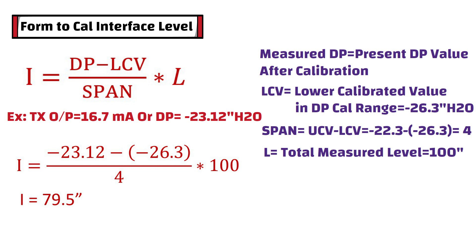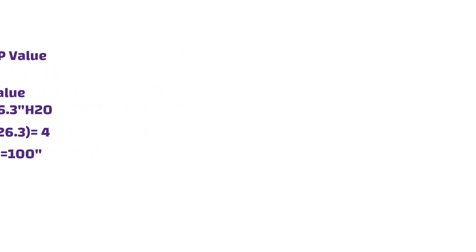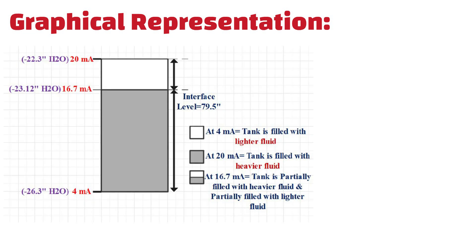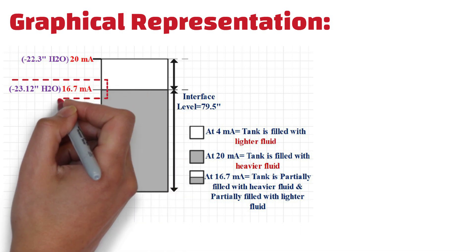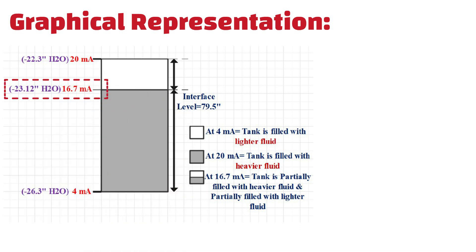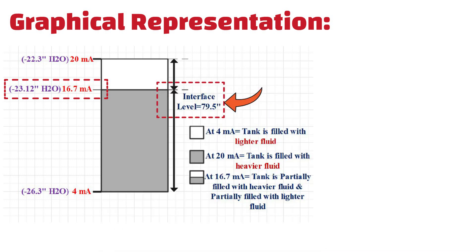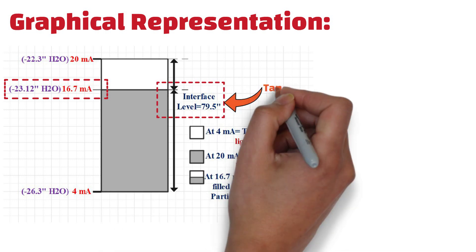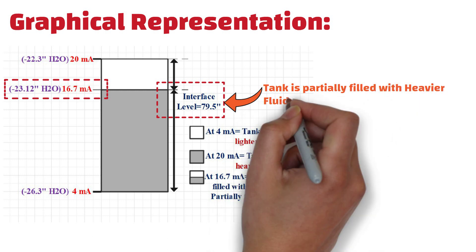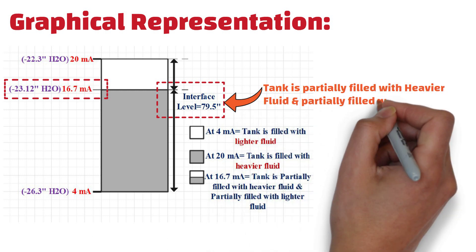Let me explain this graphically. As you can see from this graph, when the transmitter reads minus 23.12 inches H2O, or when the transmitter output is 16.7 milliamps, the interface level is 79.5 inches. At this height, the tank is partially filled with heavier fluid and partially filled with lighter fluid.